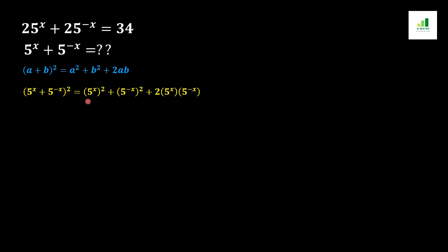It will be equal to (5 to the power x) whole square plus (5 to the power minus x) whole square plus 2 times 5 to the power x times 5 to the power minus x, because 5 to the power x is equal to a and 5 to the power minus x is equal to b. We replace all values inside this formula at the place of a and b, and we get this equation. In the next step, we simplify this equation.